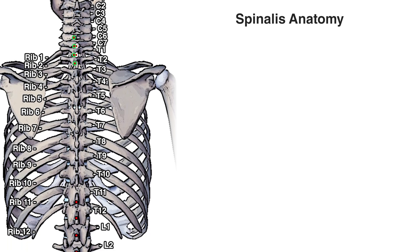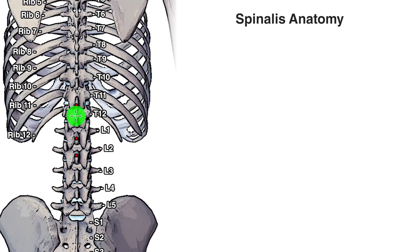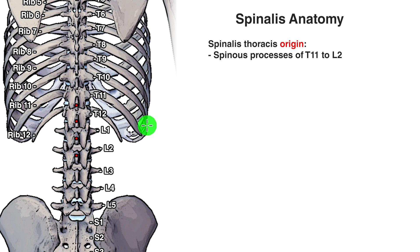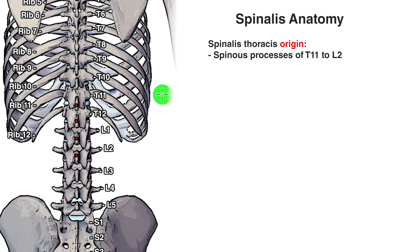Let's describe where these origin points are, starting with the thoracis section — it originates on the spinous processes of vertebrae T11 to L2. The spinous processes are the projections which come off the back of each vertebra. The ones off the side are the transverse processes, and the projections off the back are the spinous processes — the little bumps you can feel down the back of your spine if you run your finger down it.